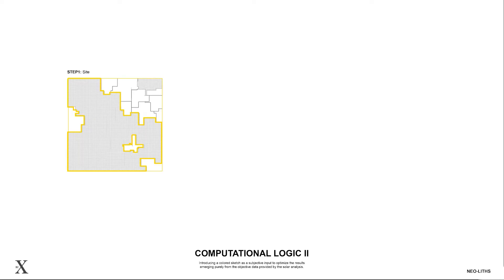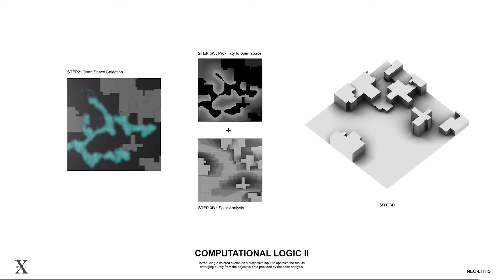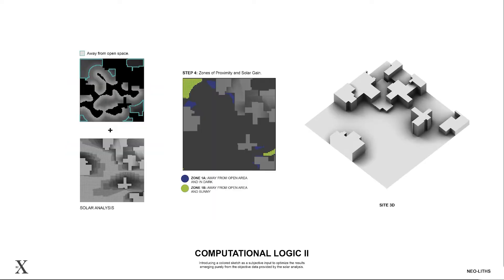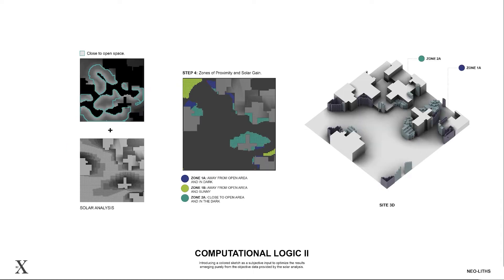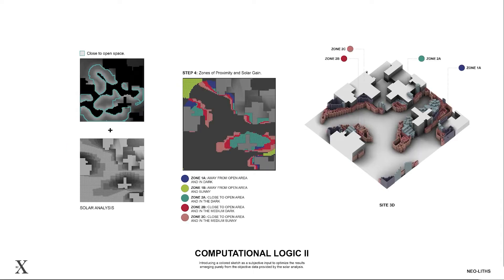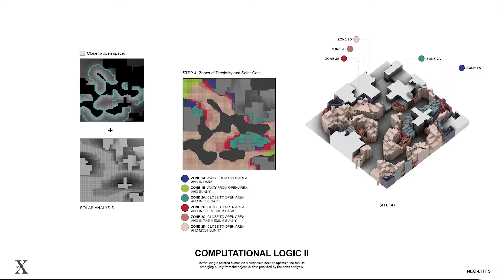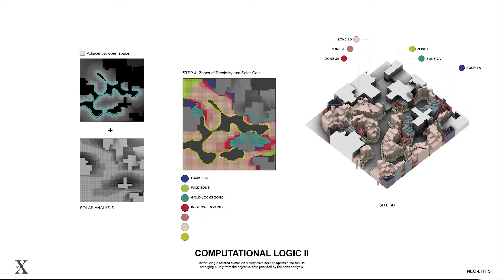For the second computational logic, a gestural sketch becomes the driver for the location of an open space in the wilderness zone. The criteria for subdivision acquires intelligence by taking into consideration both solar analysis and the proximity to open space defined by the subjective input.